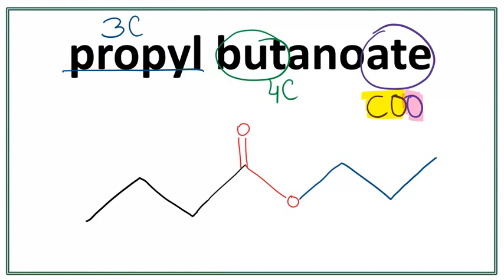So this is the structure for propyl butanoate. Remember the side chain always attaches with this oxygen right here and the parent chain always attaches with this carbon right here.